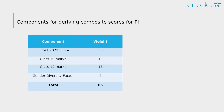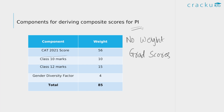Here comes the major change. These are the various components for deriving composite scores for the personal interview shortlisting. This time there is no weightage for your graduation scores — graduation marks have been completely removed from the shortlisting criteria for the personal interview. Last year a 15 percent weightage was given to grad scores, but this time grad scores have been excluded. However, to be eligible for the MBA program, candidates should still have 50 percent marks or equivalent CGPA, or 45 percent in case of SC, ST or PWD categories.